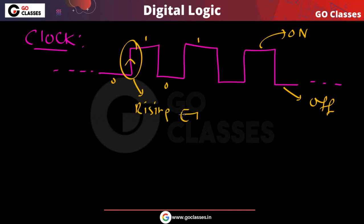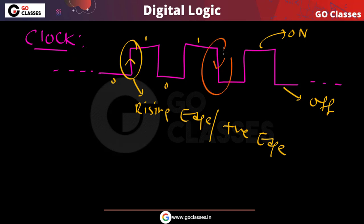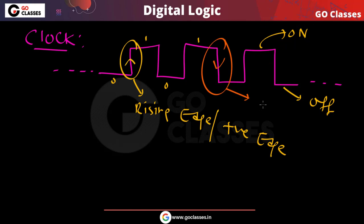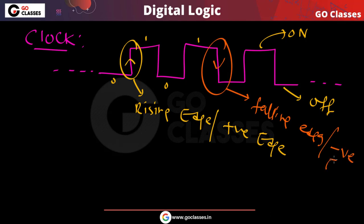During the rising edge, the clock is going from zero to one. And you can notice this edge here — the clock is going from one to zero, from the on state to the off state. This is called the falling edge, because our clock is going from one to zero, from high level to low level. This is called the falling edge or the negative edge.